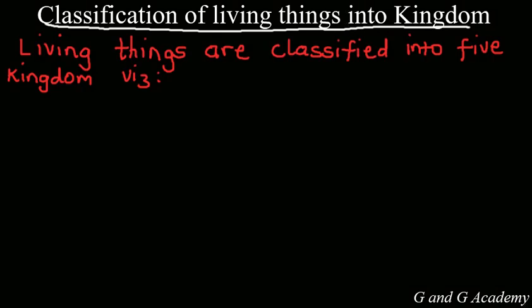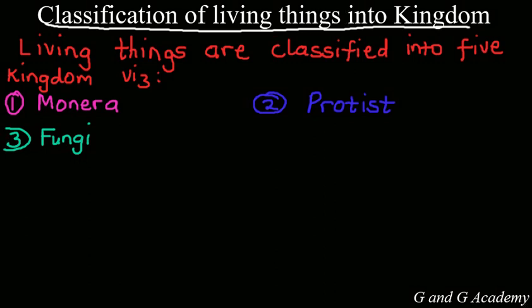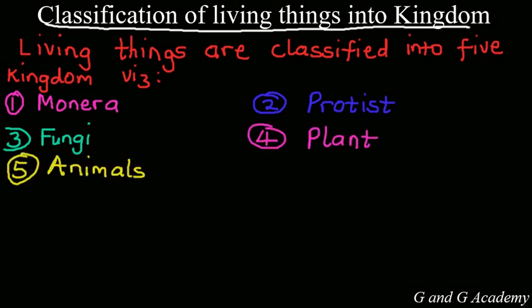Living organisms can be classified into five kingdoms. This includes the Monera Kingdom, which is the simplest and what we are going to be discussing in today's lesson. Another one is Protist, another one is Fungi, another kingdom is Plants, and of course the last one is Animals. But in today's lesson, we are going to be talking mainly on the Moneras.